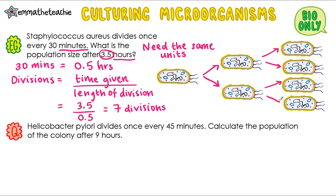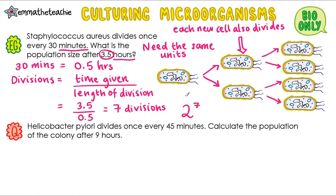It's important to remember that each new cell that is created will also divide in this time, so each new cell will divide to give two new cells. Because of this, we're able to use the number 2 to work out our answer, and we just do 2 to the power of the number of divisions. So in this case it's going to be 2 to the power of 7. This just means you're multiplying two by itself seven times, but it's easier to do it on your calculator, and you get 128. Try the next question on your own and then press play when you're ready to go through the answer.